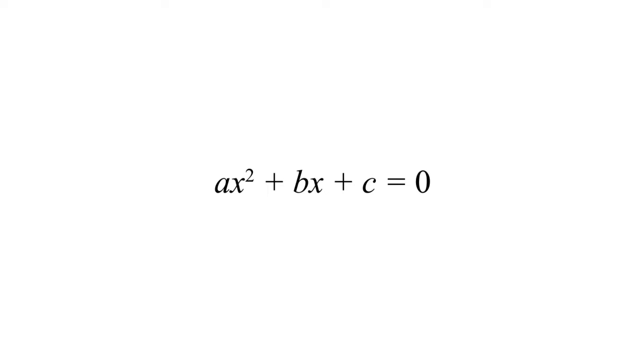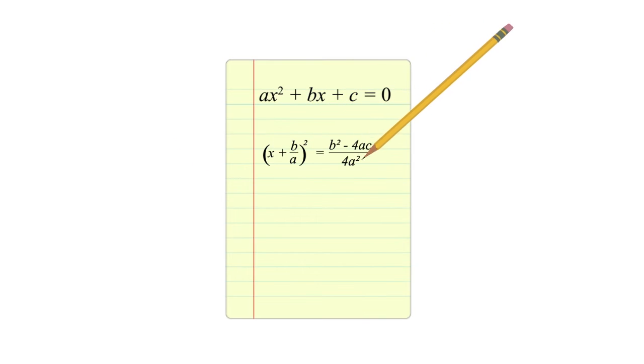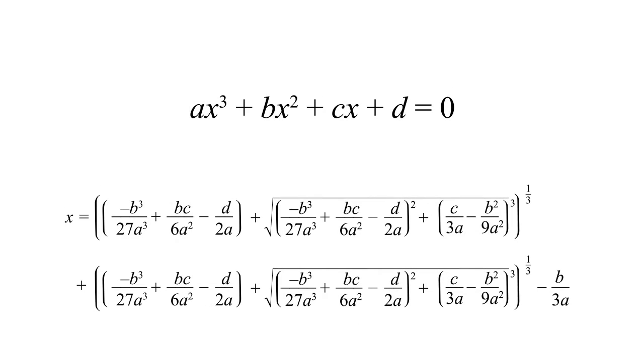A symbolic variable is a quantity that doesn't yet have an assigned value and is instead represented by a symbol, like a letter. And while some symbolic expressions are simple enough for a pencil and paper approach, some others, well, aren't.